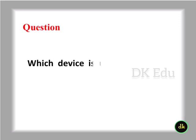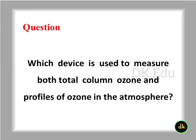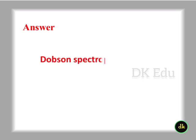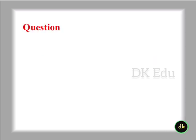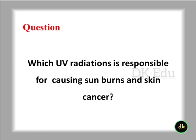1987. Which device is used to measure both total column ozone and profiles of ozone in the atmosphere? Dobson spectrophotometer. Which UV radiation is responsible for causing sunburns and skin cancer?